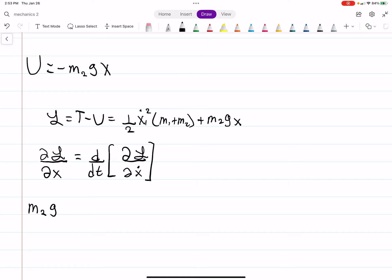DL by DX is pretty straightforward. That's just going to be mass 2 times G. And on the other hand, that's equal to D by DT of the derivative of the Lagrangian with respect to velocity. So if we do that, that'll just be X1 dot M1 plus M2.